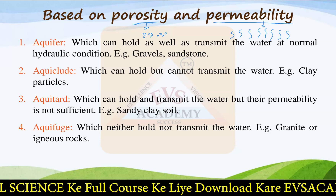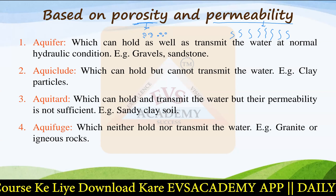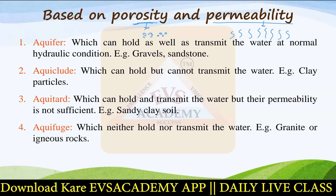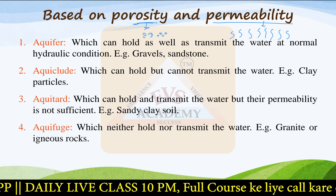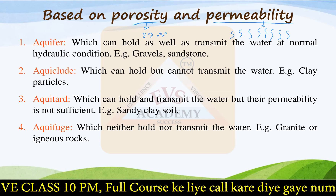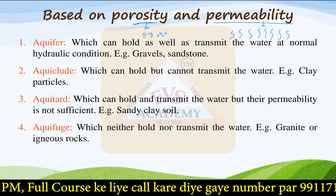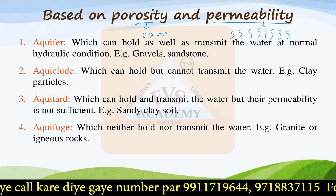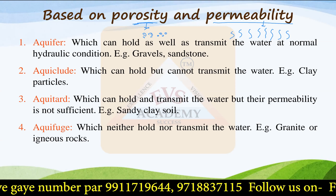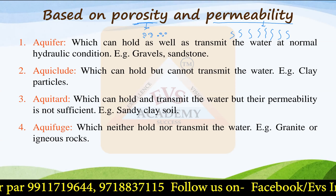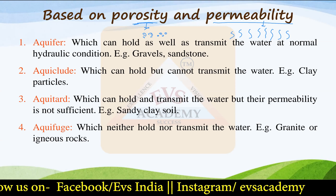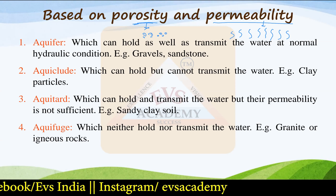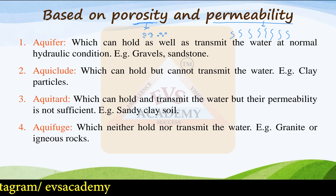According to porosity and permeability, groundwater mediums are of four types. The first is the aquifer, which can hold as well as transmit water under normal hydraulic conditions. Examples are gravels and sandstones. The holding capacity is good and water is also transmitted easily, meaning it is permeable. So these are termed aquifer-type groundwater mediums.